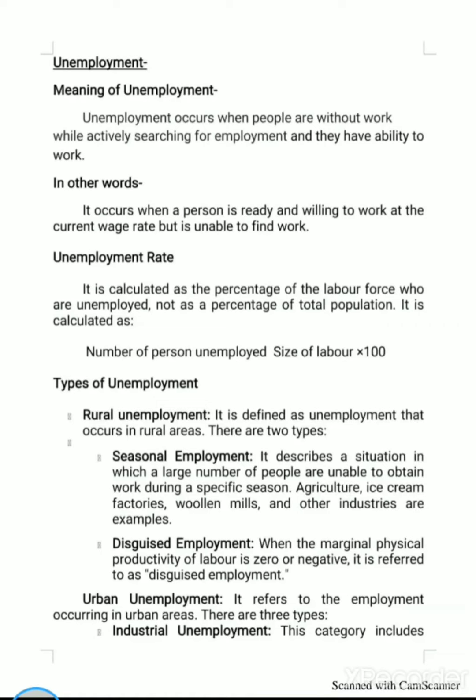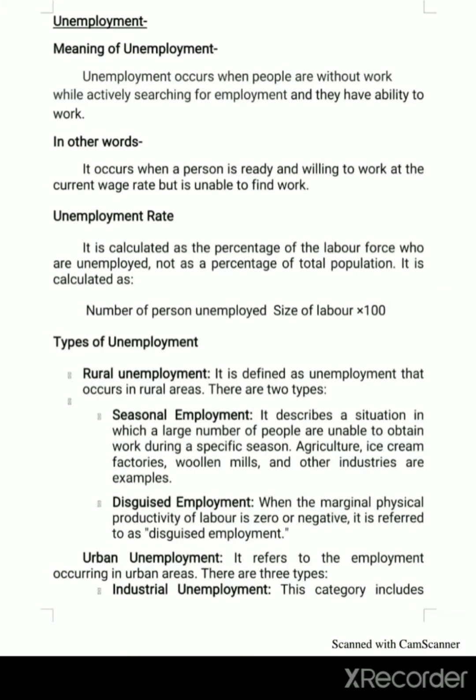The next concept is unemployment. Unemployment occurs when people are without work while actively searching for employment, and they have the ability to work. Unemployment means they have both the ability and the interest to work, but when they search for employment, they don't find it.